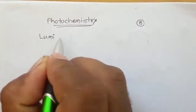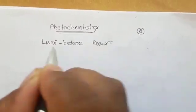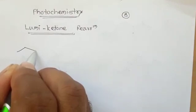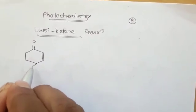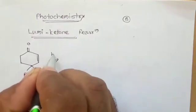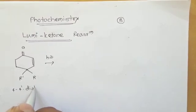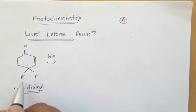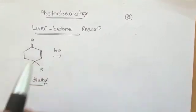Today we will learn the third rearrangement reaction of photochemistry, which is the lumiketone rearrangement. In this reaction, you will find alpha-beta unsaturation in the starting material, and at the fourth position you will find two alkyl groups — a 4,4-dialkyl system. When a 4,4-dialkyl system is in conjugation with alpha-beta unsaturation, you immediately identify this as a lumiketone rearrangement reaction.